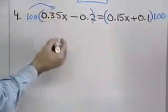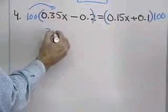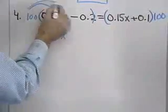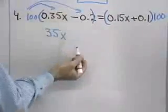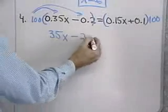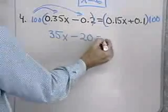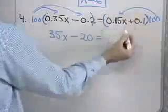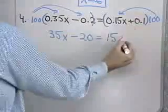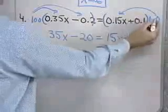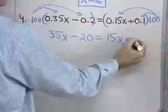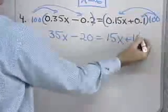100 times 0.35x is 35x. 100 times 0.2 will be 20. 100 times 0.15x is 15x. And 100 times 0.1 will be 10.